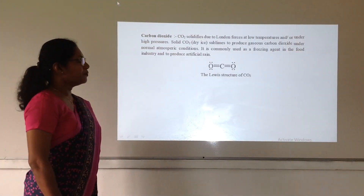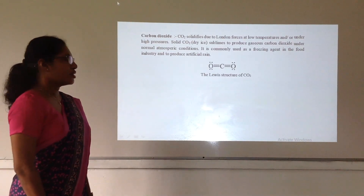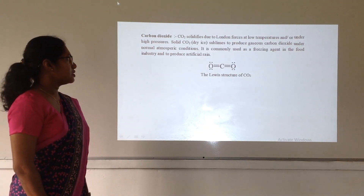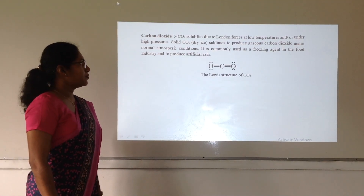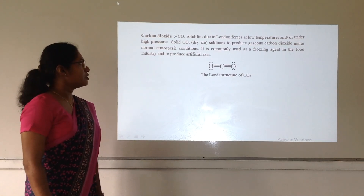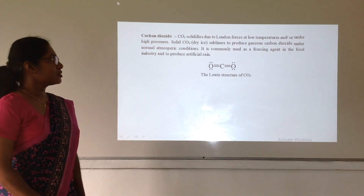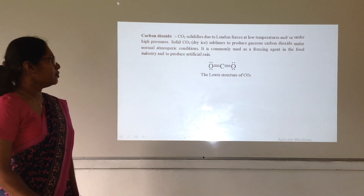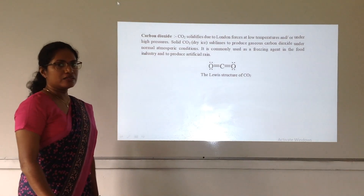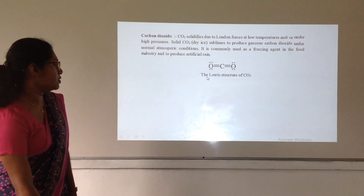Carbon dioxide is a non-polar molecule and has only London dispersion forces. These forces are very weak, so at low temperatures and under high pressure, carbon dioxide solidifies and we call that dry ice. This solidified carbon dioxide sublimes to produce gaseous carbon dioxide under normal atmospheric conditions. That is why dry ice is used as a freezing agent in the food industry and to produce artificial rain.